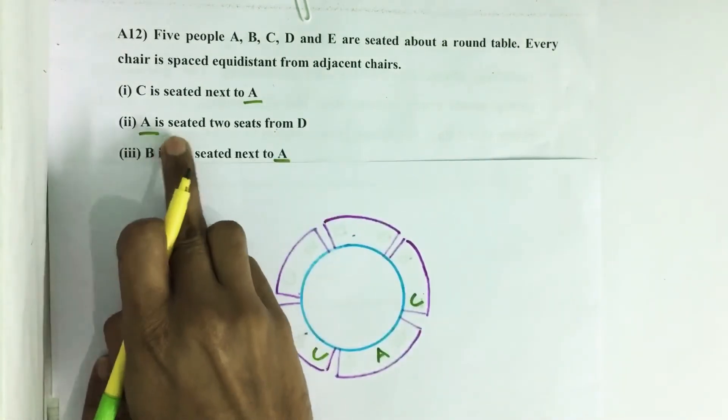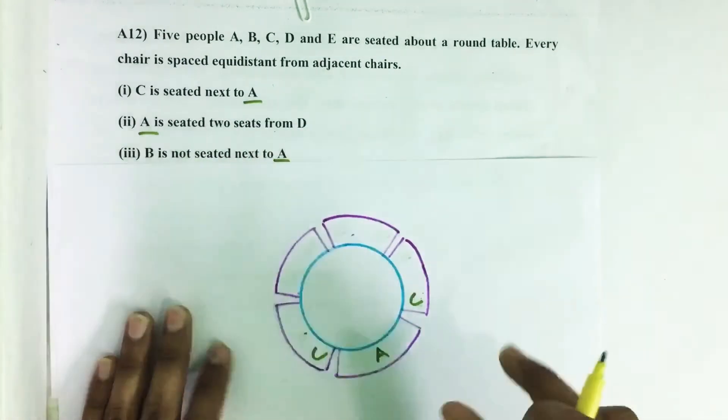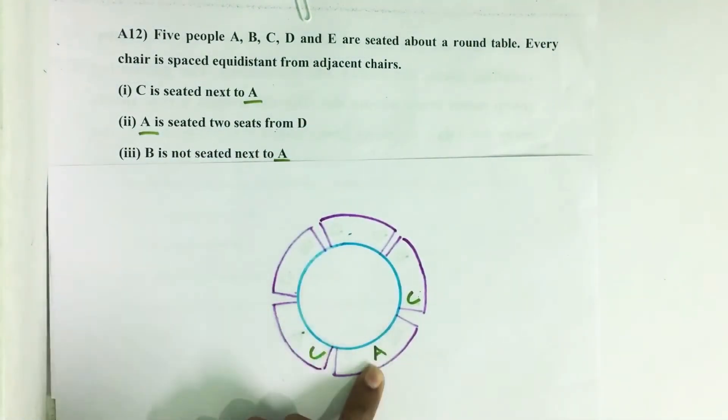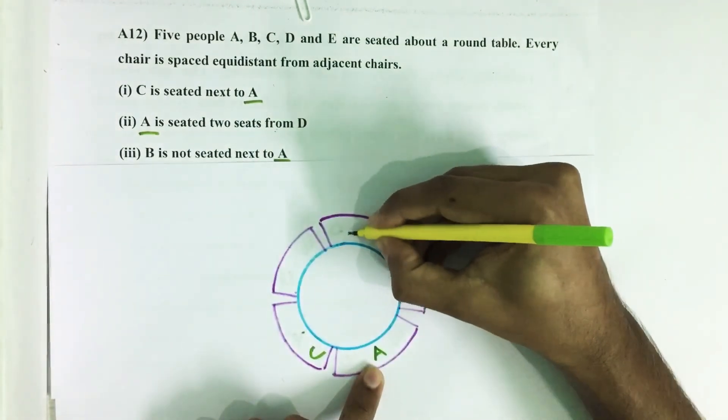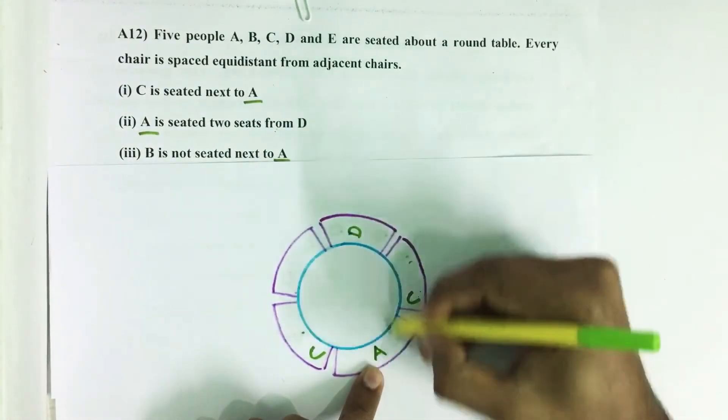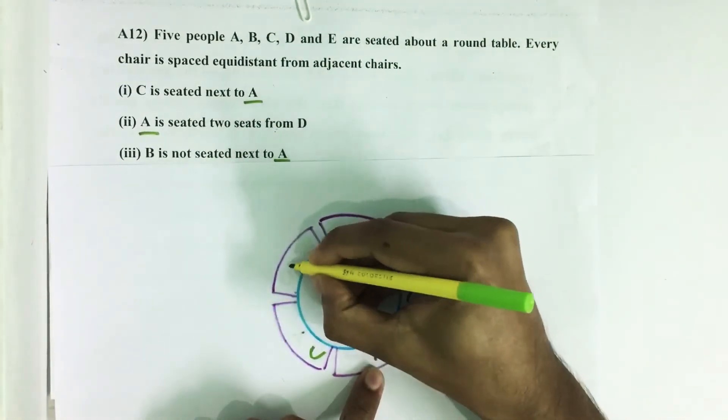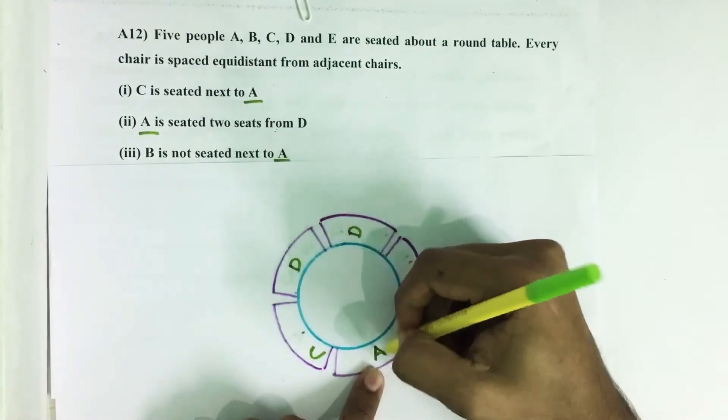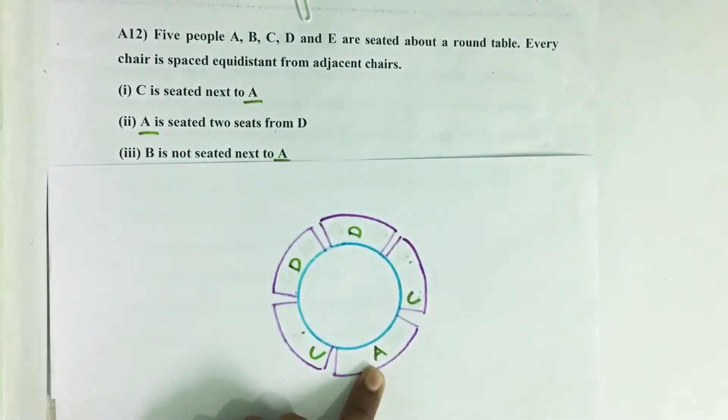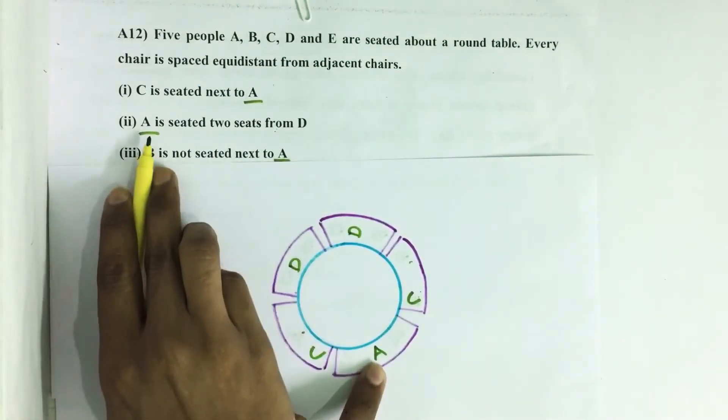Then A is seated two seats from D. That means suppose if D is here, two seats from D is here where A is. Otherwise on the left side, if D is here, two seats from D it is A. That is statement two.